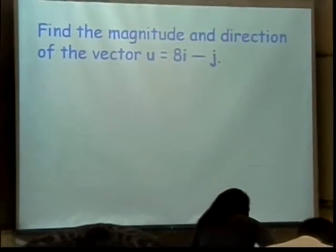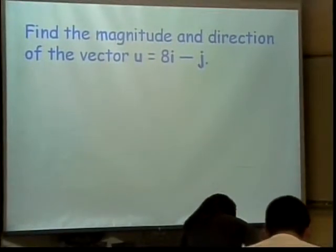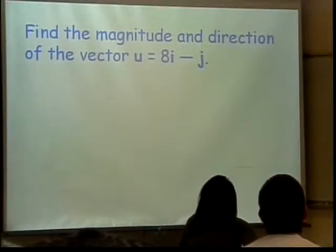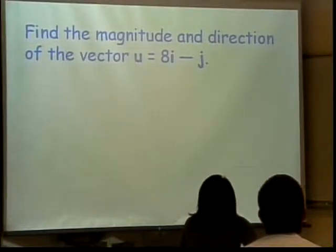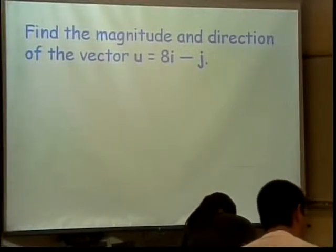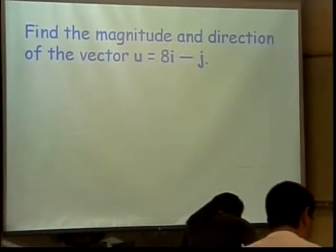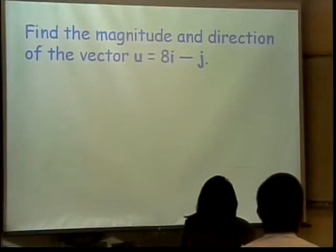Find the magnitude and the direction of the vector u. Well, the magnitude is easy. How do I find the magnitude of this vector? So, I have the vector. Square root. So let's see. I have 8i minus j. So the magnitude of u is going to be the square root of 8 squared plus 1 squared, square root of 65. Right?